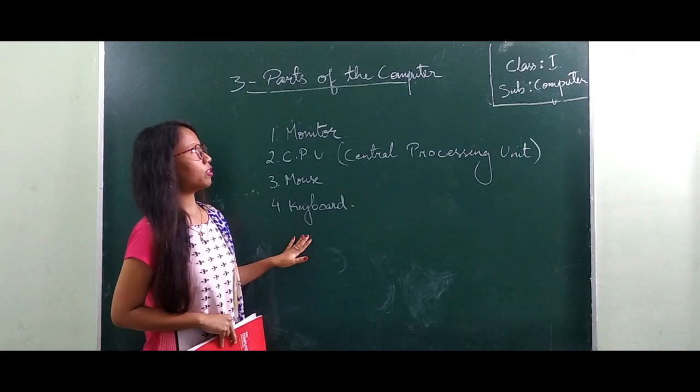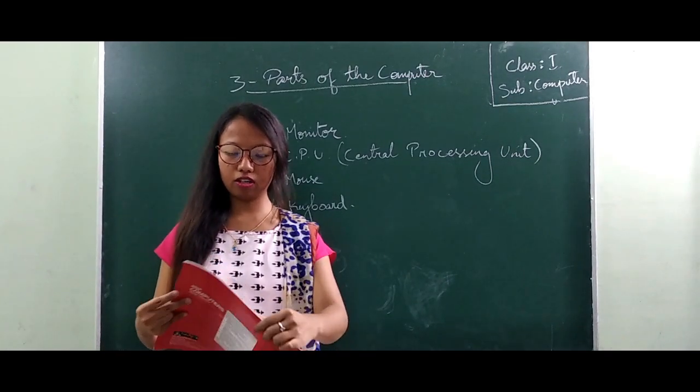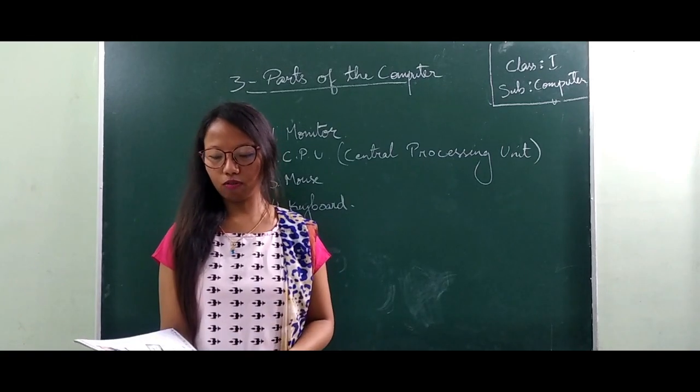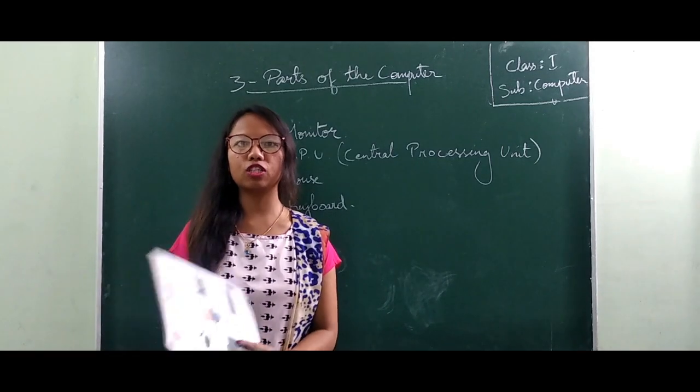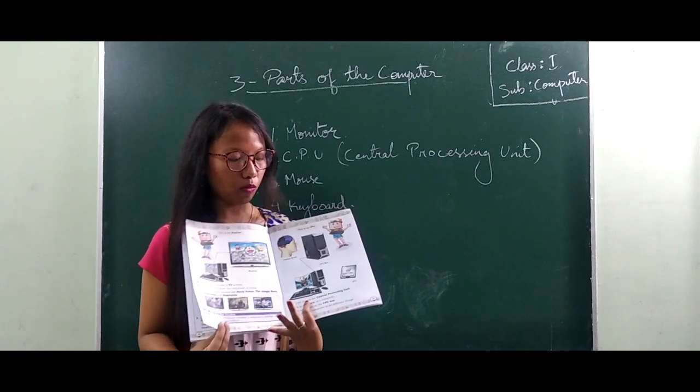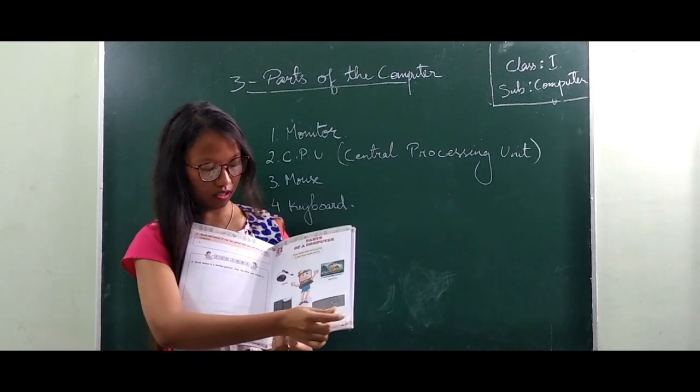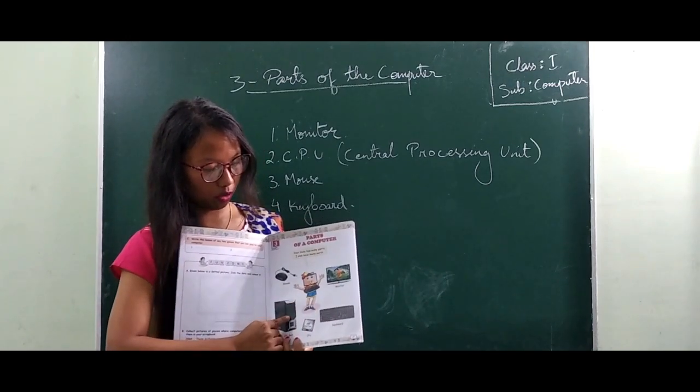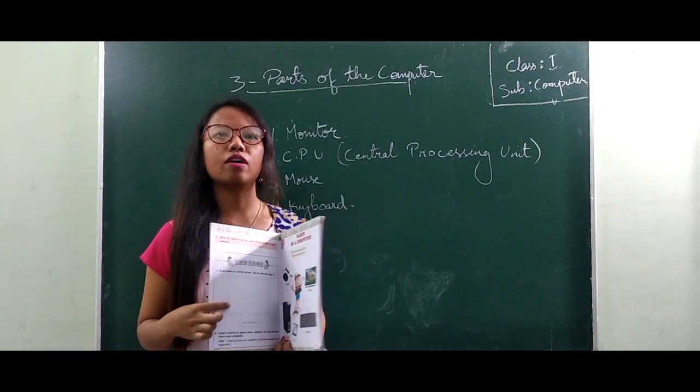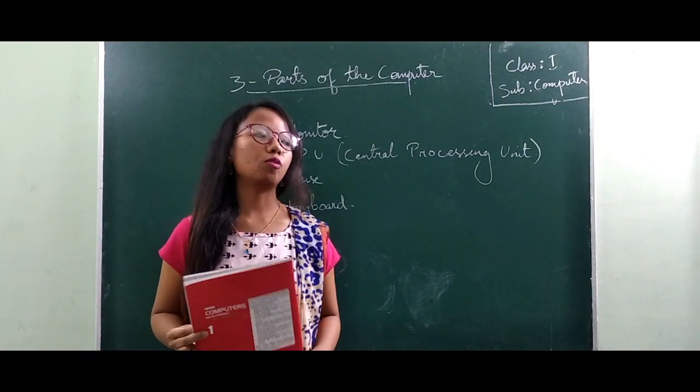Today we have learned the different parts of the computer. If you go through the books, there are the details of all the parts of the computer along with pictures which will help you to understand a little bit more about it. Like we have the monitor, CPU, keyboard, and mouse. You can go through the textbook for more details.